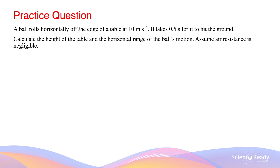A ball rolls horizontally off the edge of a table at 10 meters per second. It takes 0.5 seconds for the ball to hit the ground. Calculate the height of the table and the horizontal range of the ball's motion. Assume air resistance is negligible.